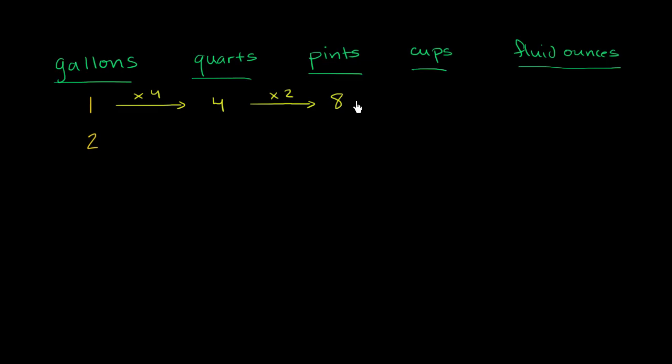Each pint is equal to two cups, so we have eight pints equal to 16 cups. Finally, if we're converting from cups to fluid ounces, each cup is eight fluid ounces. So 16 cups is 16 times 8. Let's see, 8 times 8 is 64, and twice that is 128 fluid ounces.